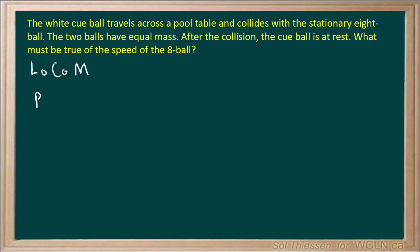The law of conservation of momentum tells us that the momentum in a closed system before an event — usually a collision — must be equal to the momentum in the system after that event. In this case, we can take the momentum before the collision to be the mass of the cue ball times the velocity of the cue ball — and velocity is an important distinction since momentum is a vector quantity — plus the mass of the eight ball times the velocity of the eight ball.